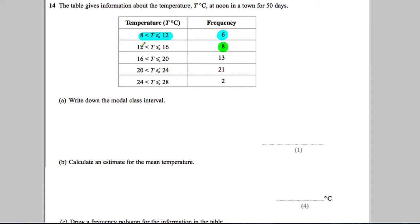On 8 days there was a temperature that was bigger than 12 degrees but less than or equal to 16. And so on. So 13 days where we were between 16 and 20, 21 days where we were between 20 and 24, etc.